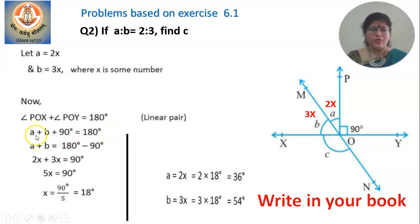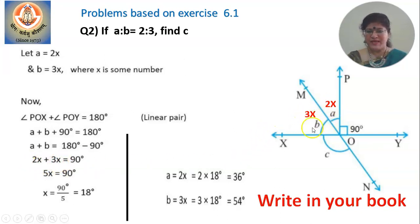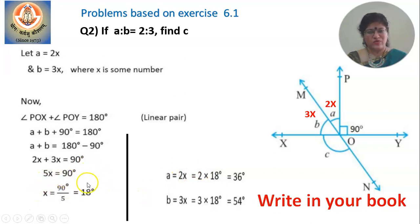You have already assumed A to be 2X and B to be 3X. Substituting, you get 2X plus 3X plus 90 equal to 180. Solving, you get 5X equal to 90, so the value of X is 18 degrees.